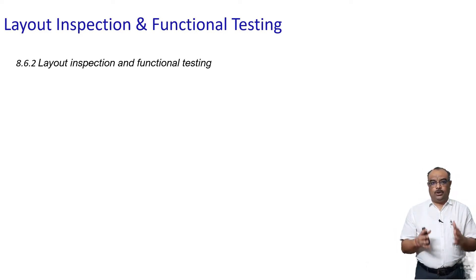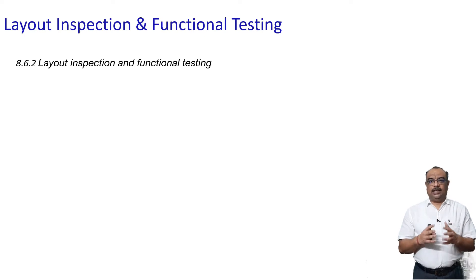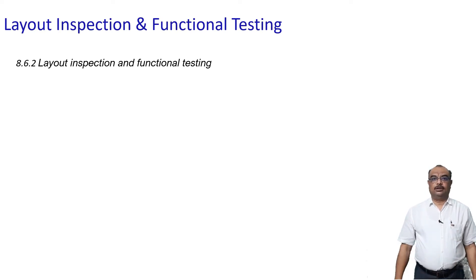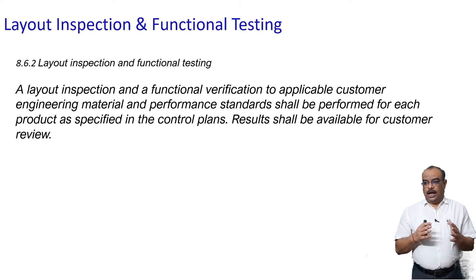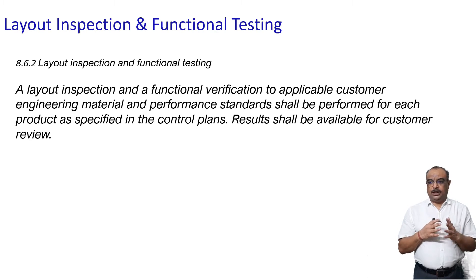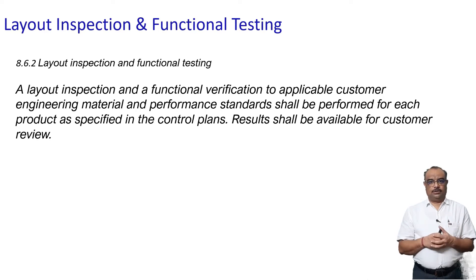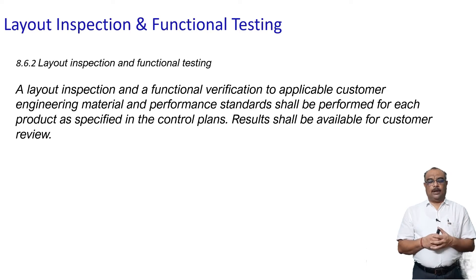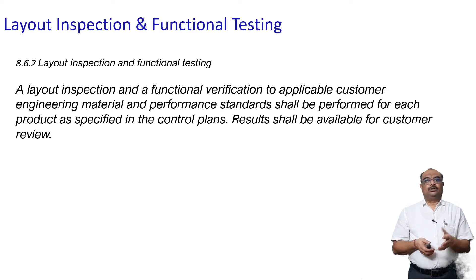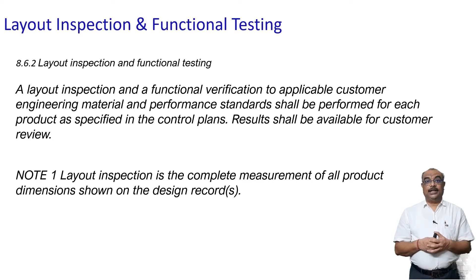According to IATF 16949, there is one clause: 8.6.2. The requirement for clause 8.6.2 is layout inspection and functional testing. The requirement states that a layout inspection and functional verification to appropriate customer engineering material and performance standards shall be performed for each product as specified in the control plan, and results shall be documented for customer review.